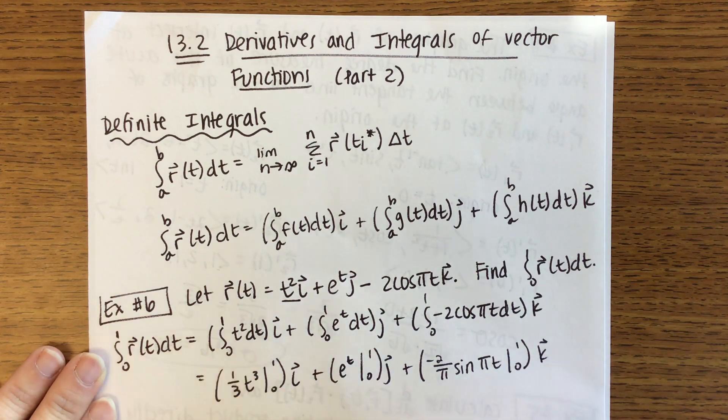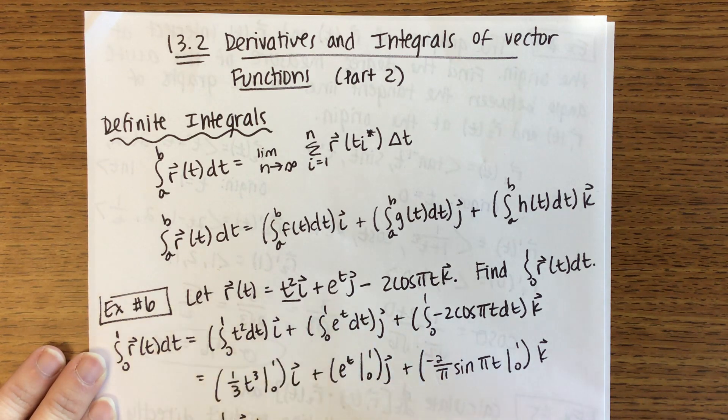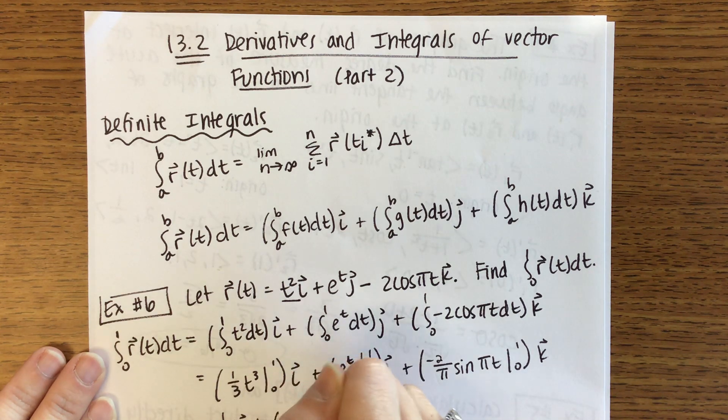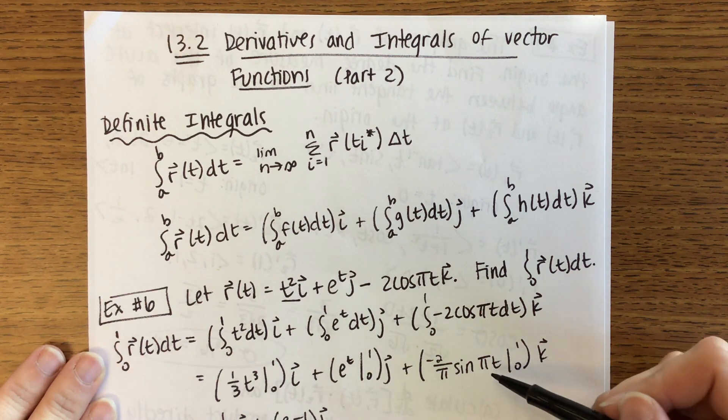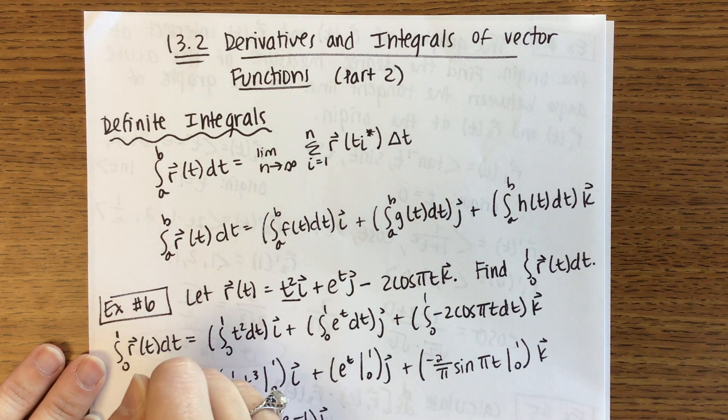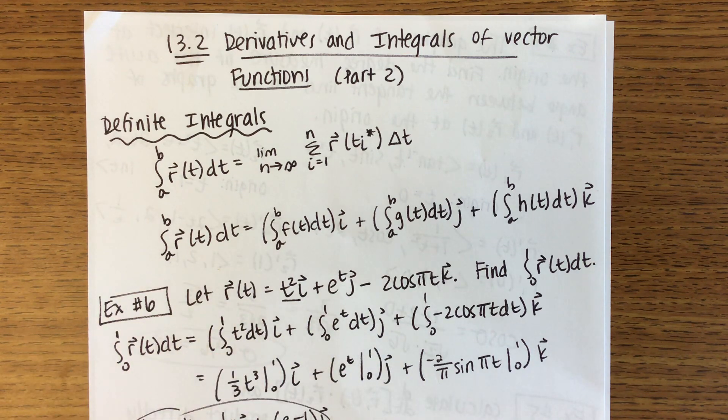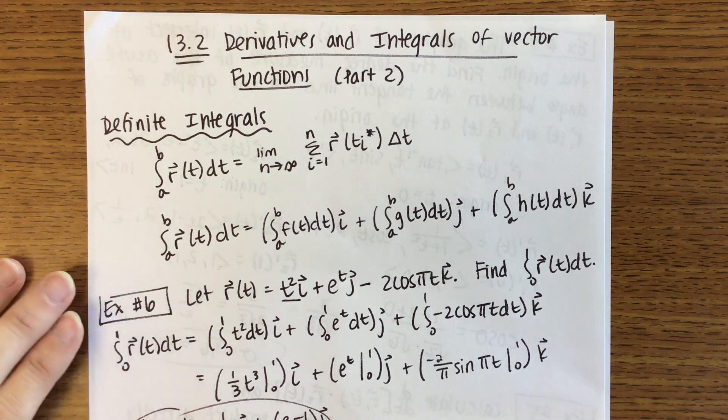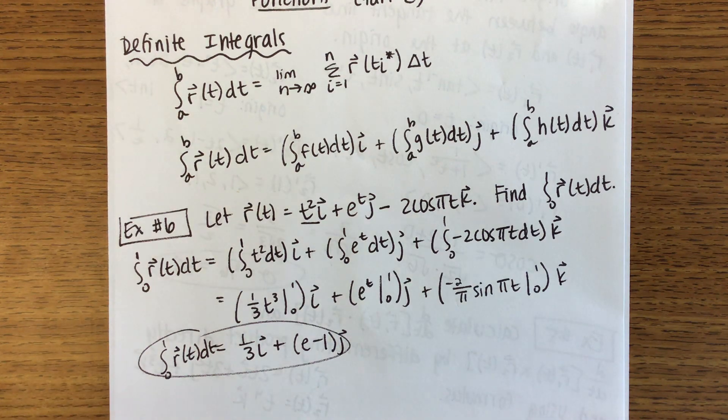So this then ends up being, once I plug in my 1, I get 1/3 i. When I plug in 1, I get e. When I plug in 0, I get 1, so be careful there. That's (e - 1) times j. Here if I plug in 1, sine of π is going to be 0, sine of 0 is 0, so it's just 0k. So the integral from 0 to 1 of r(t) dt gives the following vector function. So that's a definite integral.